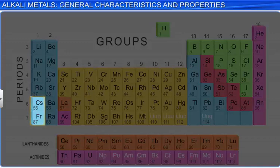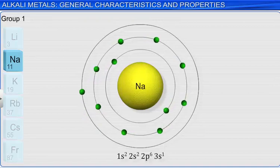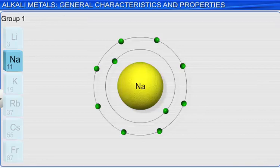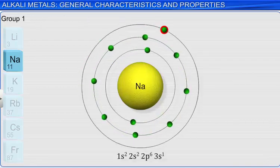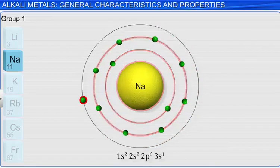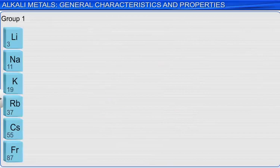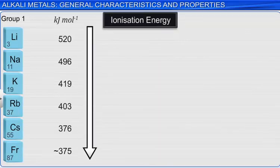Recall that ionization energy is defined as the energy required to remove the outermost electron from an isolated gas phase atom. Since the valence electrons are significantly shielded from the nuclear charge, the ionization energies of the alkali metals are relatively low. In general, ionization energies decrease down a column, and the alkali metals are no exception, as shown in the graph.